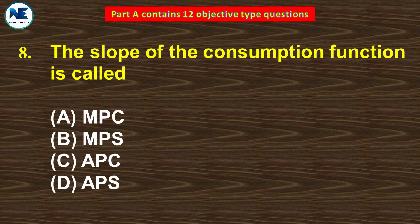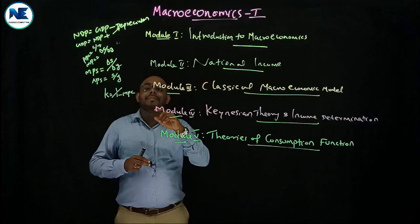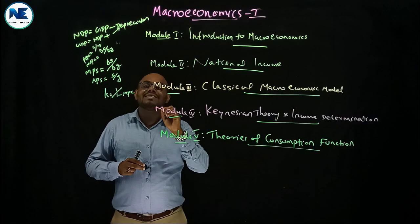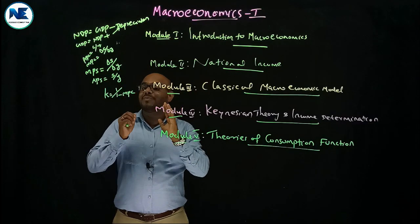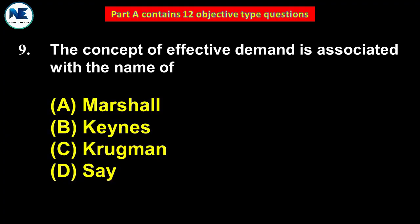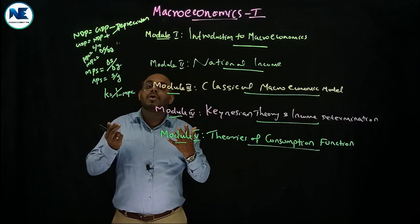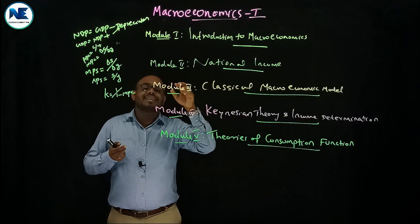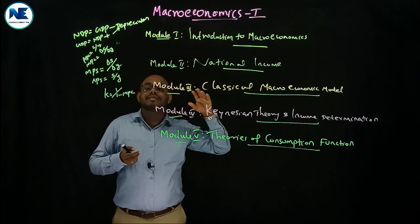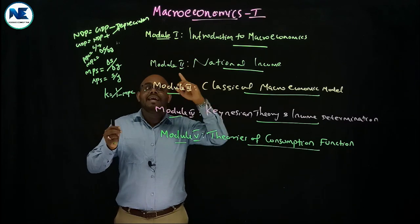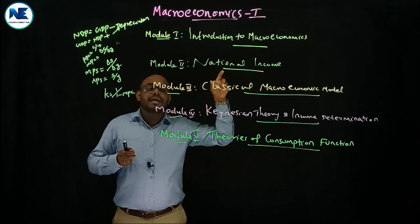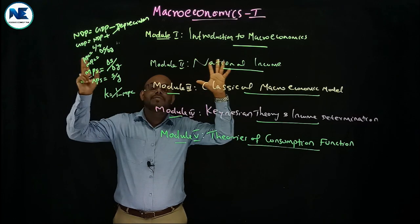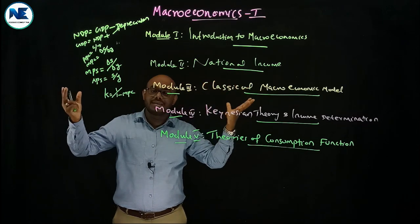Seventh question: the slope of the consumption function is called MPC — marginal propensity to consume. Ninth question: the concept of effective demand is associated with John Maynard Keynes. Effective demand involves the aggregate demand function, aggregate supply function, and Keynesian theory of income and employment determination — very very important. The role of effective demand, consumption function, and investment function.